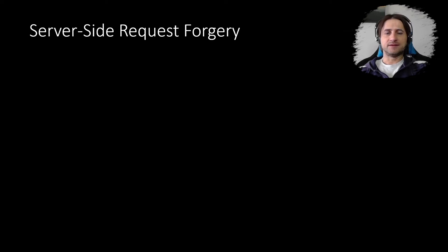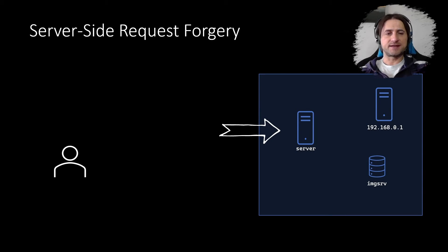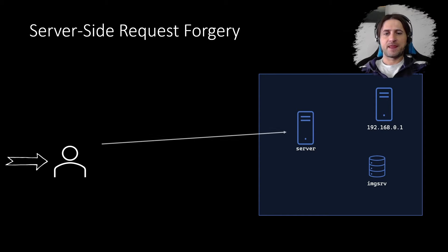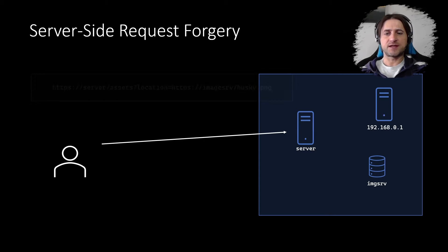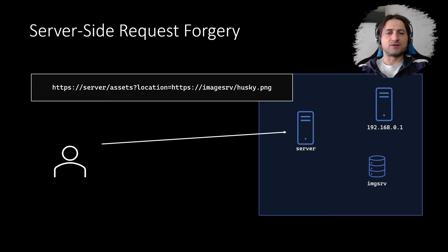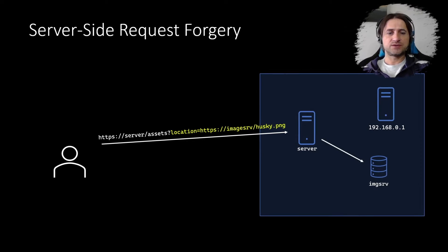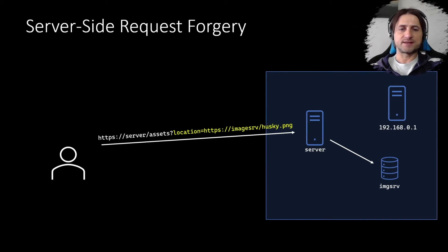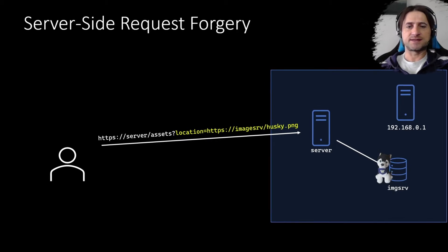Let's look at the more graphical explanation. We have a server on the right, based in a data center or an Amazon VPC, and there's a set of other services it connects to — a database server, other nodes, and so on. The user on the left wants to leverage this application, so they create a web request to download a picture. It hits the assets endpoint with the file location provided. The server sees the request, creates a separate internal request, retrieves the image, and sends it back to the user.